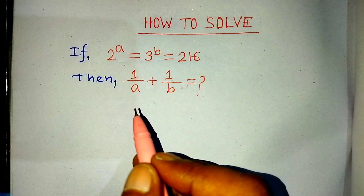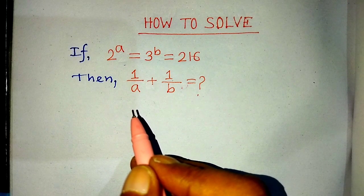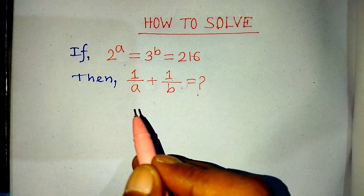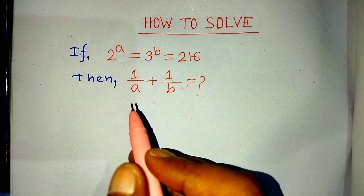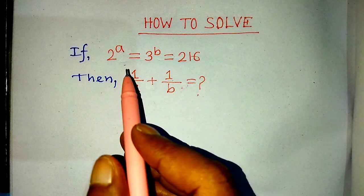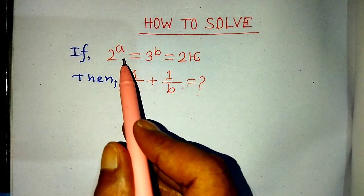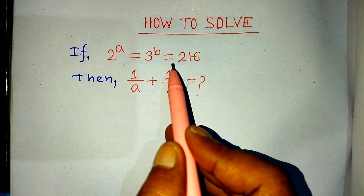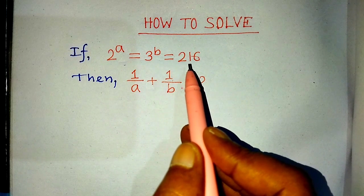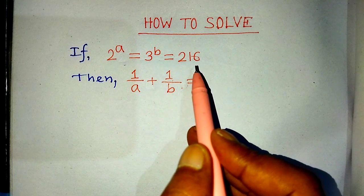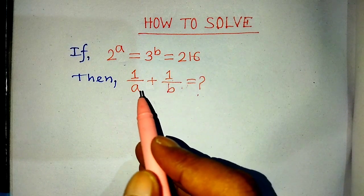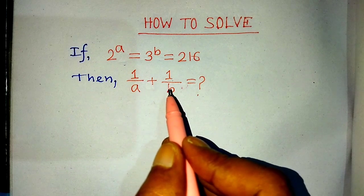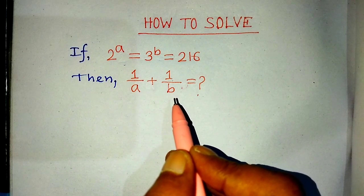Hi guys, welcome back to my channel, Alim Mass Vlog. So my dear student, today our question is: if 2 to the power A is equal to 3 to the power B is equal to 216, then find the value of 1 over A plus 1 over B.